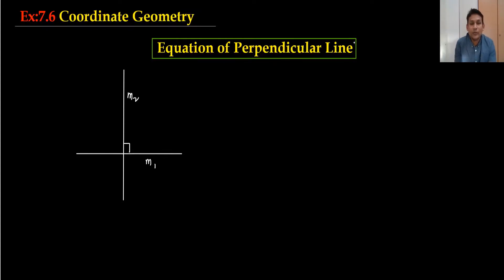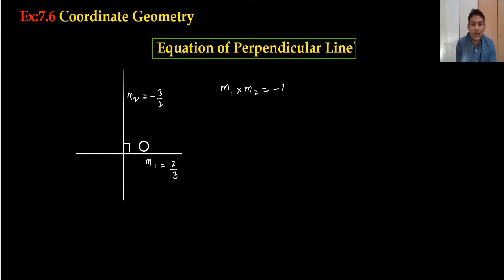When two lines are perpendicular, the gradients satisfy m1 multiplied by m2 equals minus 1. For example, if the gradient of one line is 2/3, then the other should be minus 3/2. To check: 2/3 multiplied by minus 3/2 — the 2s cancel and the 3s cancel — giving minus 1. So yes, these are the gradients of two perpendicular lines.